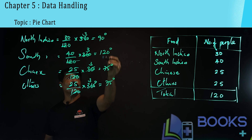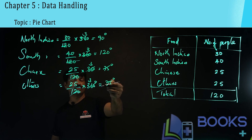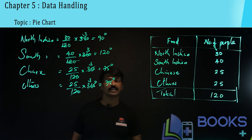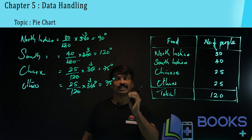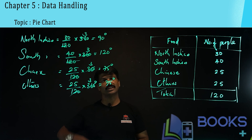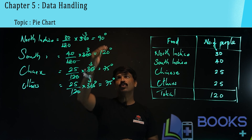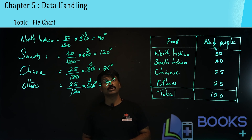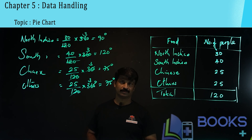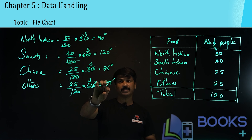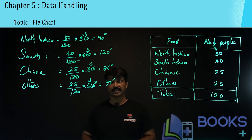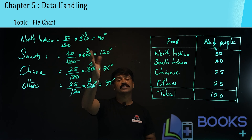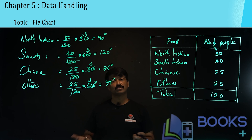When you add all these degree measures, you get 360 degrees: 90 plus 120 equals 210, then 75 plus 75 equals 150, and 150 plus 210 equals 360 degrees.